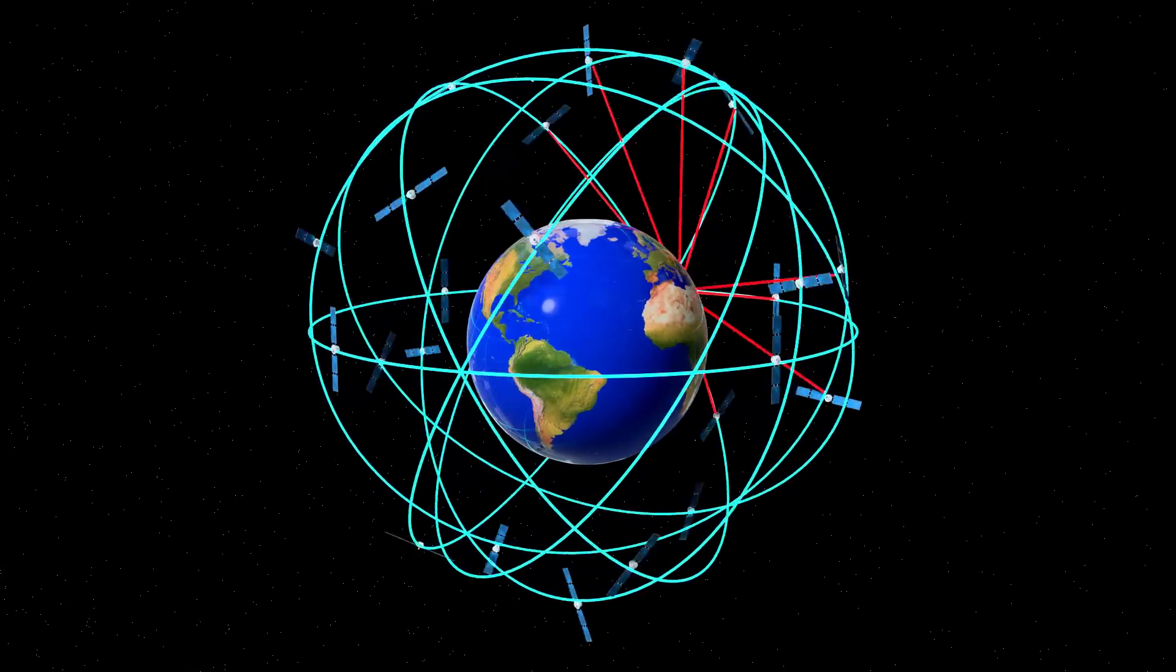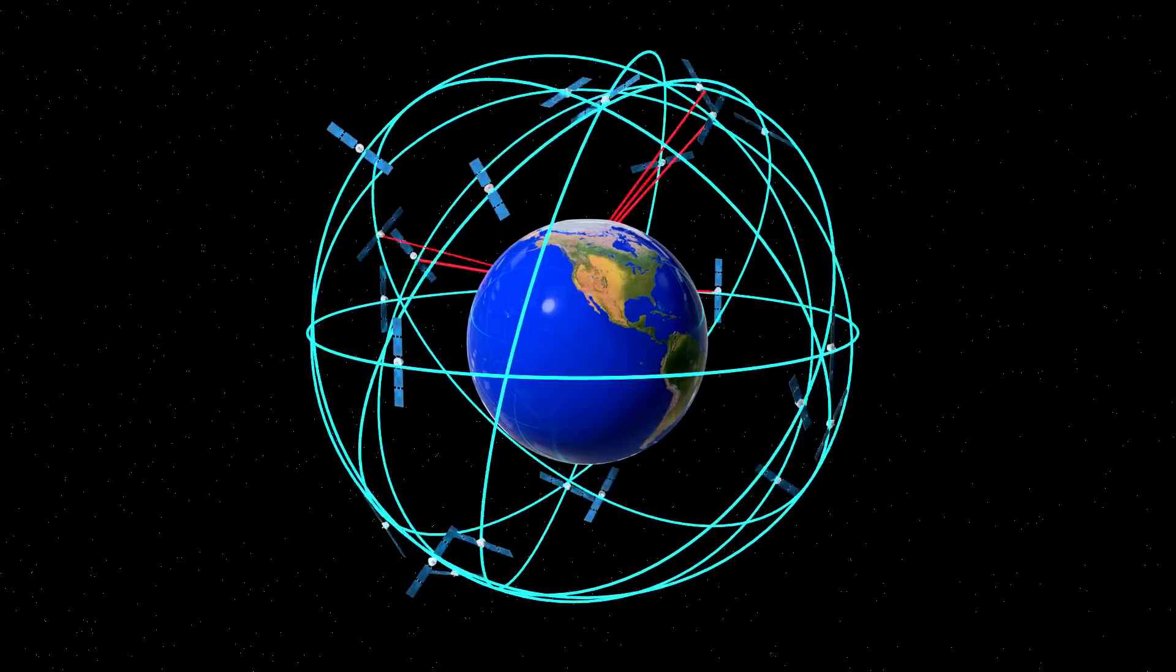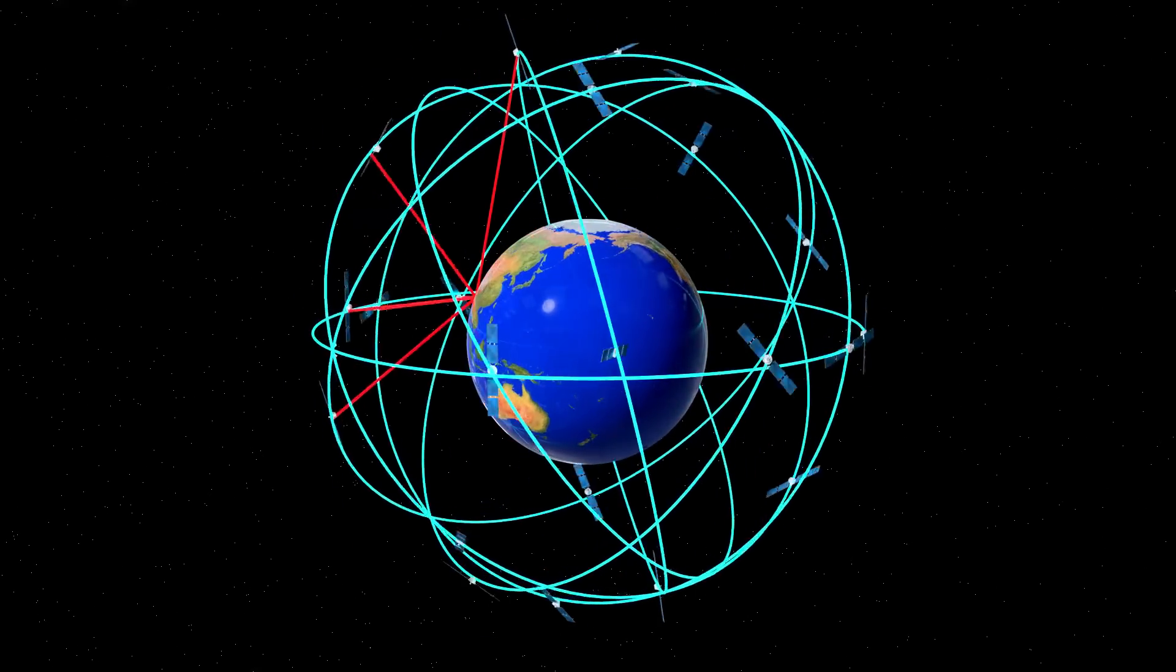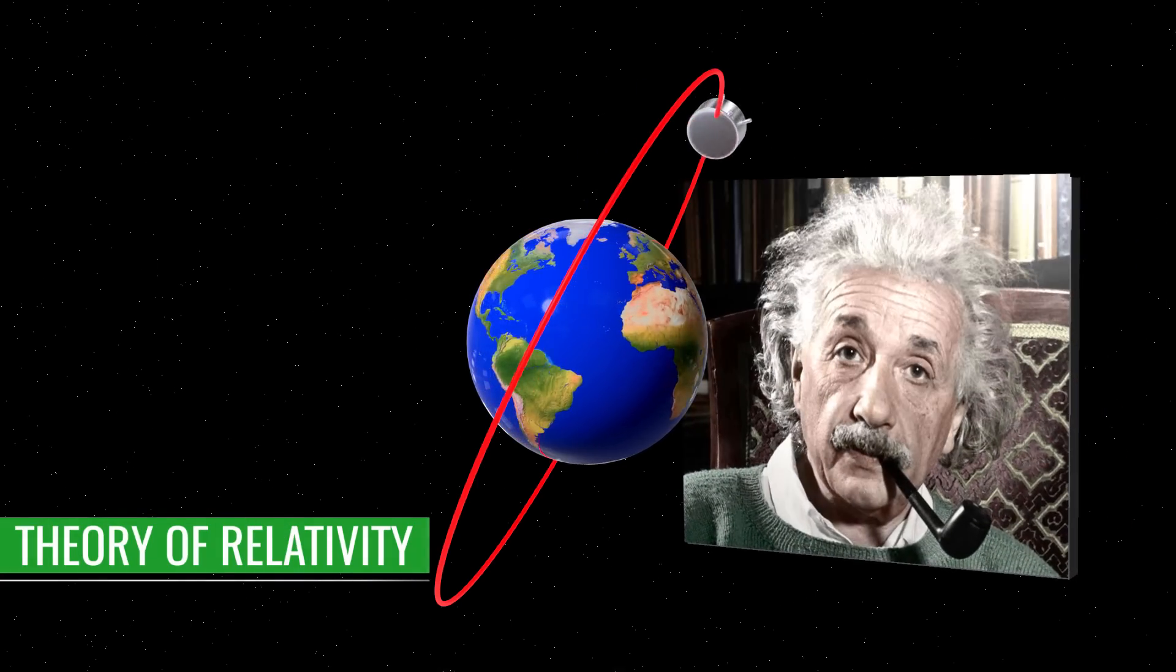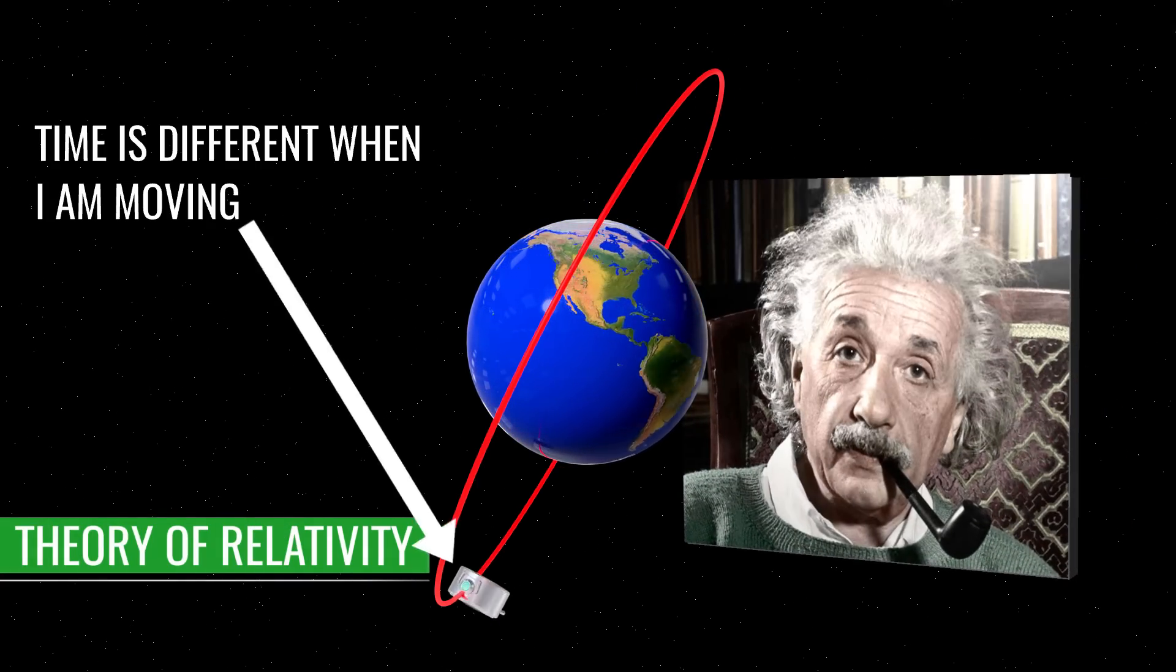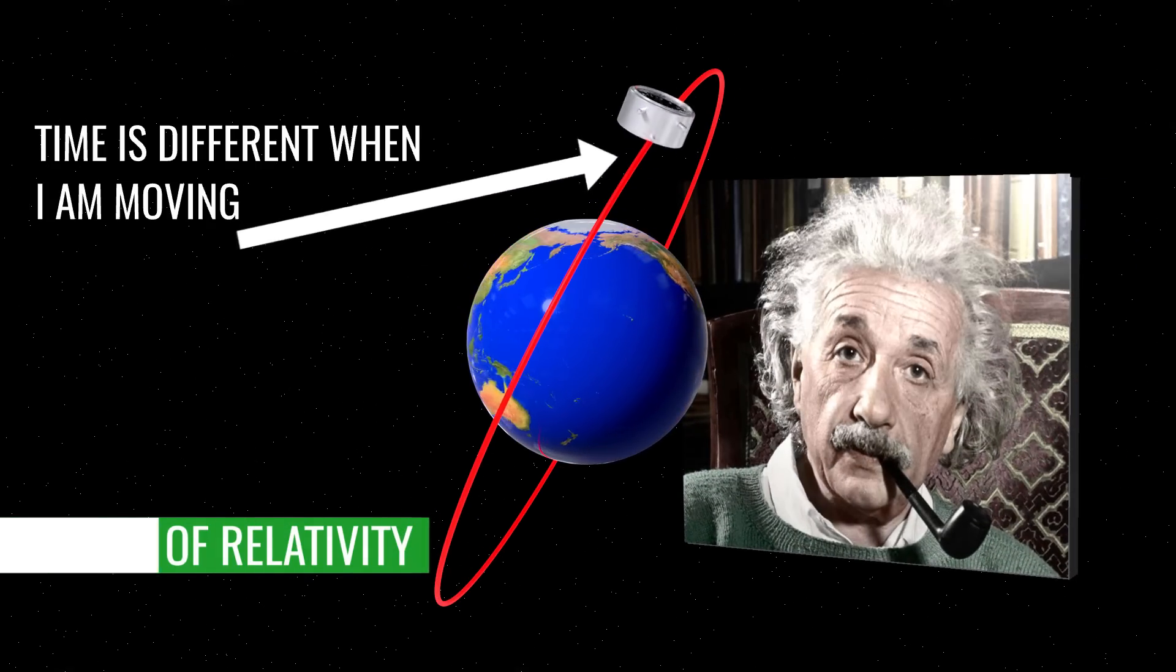Even with all these advanced technologies, this GPS system will not give you the right location. Here comes the importance of Einstein's theory of relativity. Time is not absolute. It depends upon many other factors.